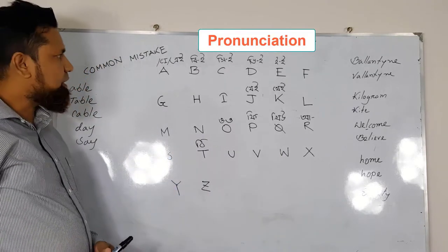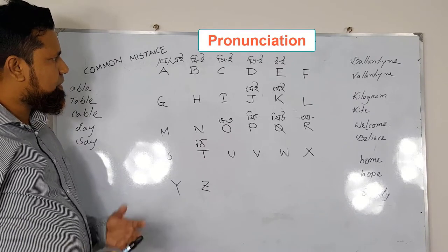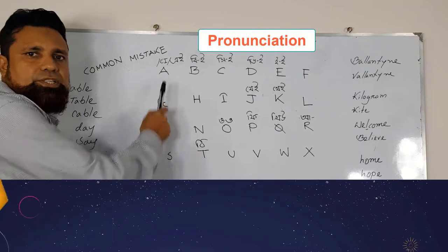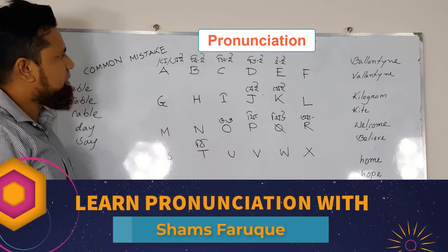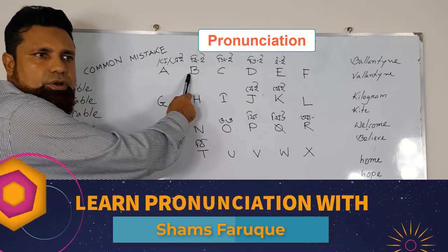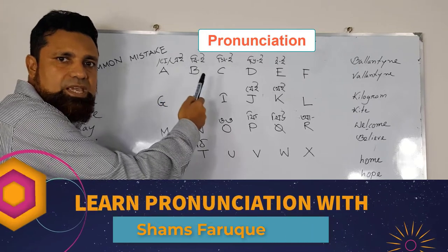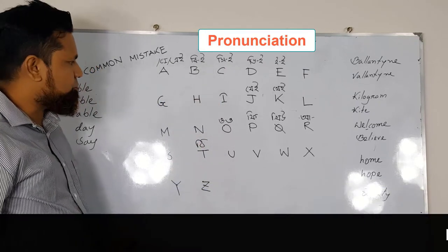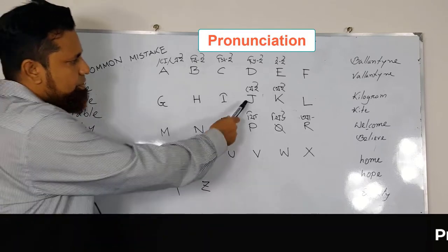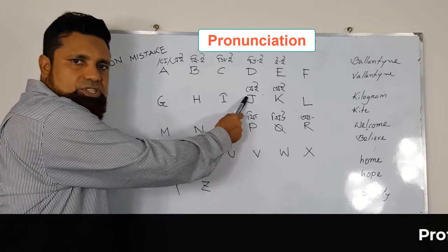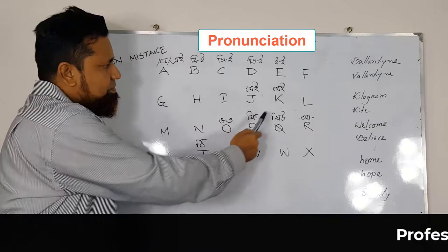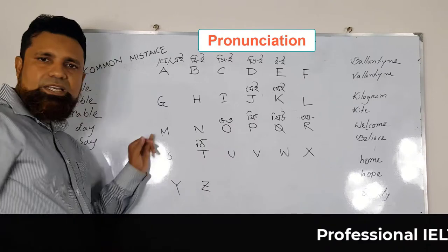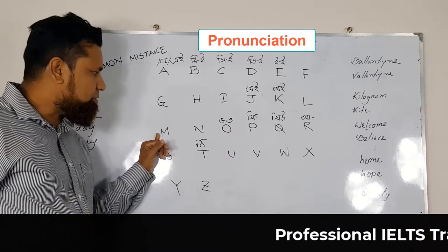So the problems in common mistakes — let's clarify this. This should be A, not A. This should not be B — it should be B. C — a bit longer than we pronounce. Then here we see this is not J — it's J. K. L. M.